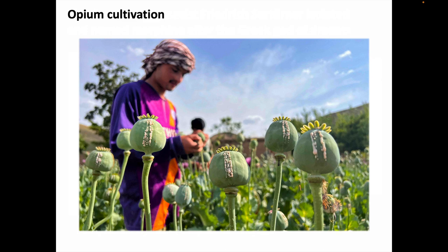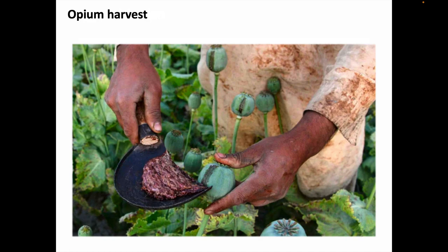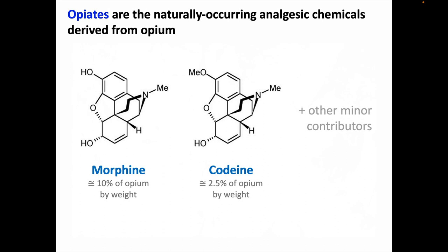Getting back to opium cultivation for a moment, here we see several seed pods with dried latex on them. This opium is harvested by scraping it off the seed pods with a curved metal spatula, and now you've got raw opium. Opiates are the naturally occurring chemicals derived from the opium we just collected. By far the most predominant opiate is morphine, comprising about 10% of opium's dry weight. The next largest amount is codeine, at around 2.5%, and the others are minor contributors.